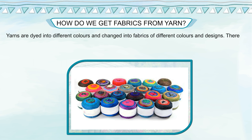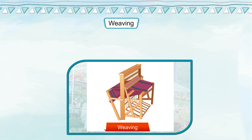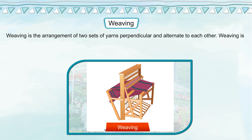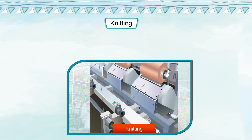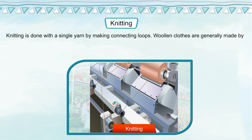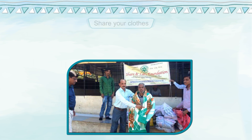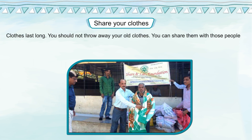Yarns are dyed into different colors and changed into fabrics of different colors and designs. There are two ways of converting yarn into fabric. Weaving is the arrangement of two sets of yarns perpendicular and alternate to each other — it is done by a machine called the loom, which can be operated by hand or by power. Most fabrics are made by weaving. Knitting is done with a single yarn by making connecting loops — woollen clothes are generally made by knitting.